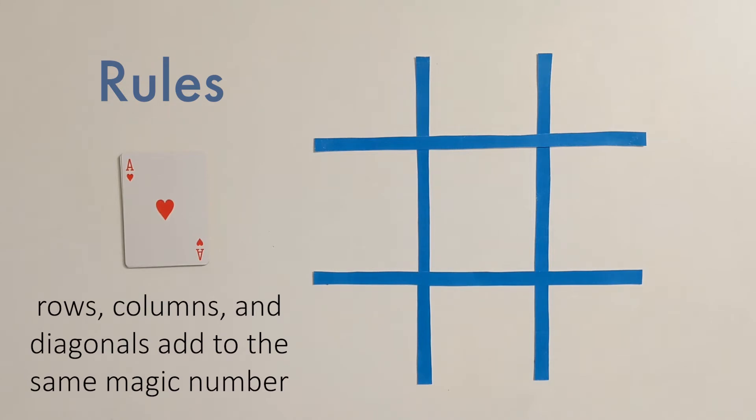Now, we don't know what this number is, but we're going to need to do some experimenting and see if we can find just the perfect number so our rows, columns, and diagonals all balance out and add to this number. Let's make an attempt at this.